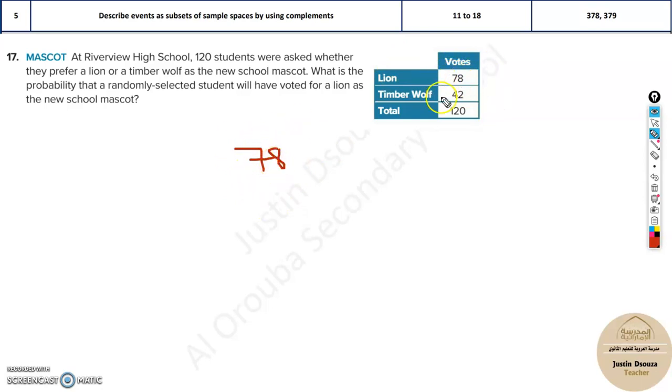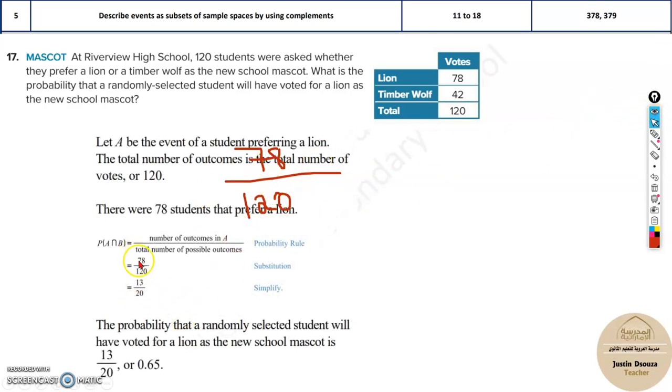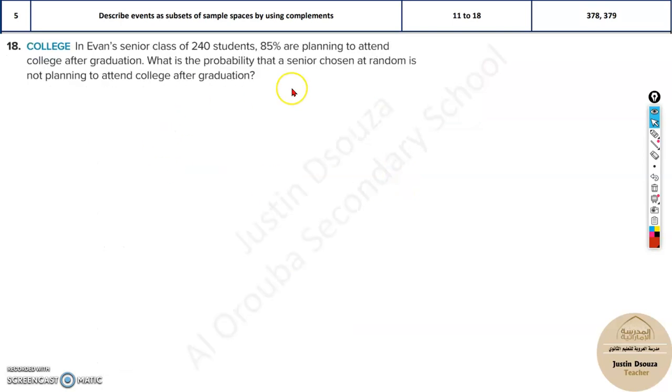The probability can be solved by number of desired outcomes. Desired is 78 divided by total outcomes, that is 120. So this would be the probability. It's 78/120 or 13/20 or 0.65. You can see the lions are leading. About 65% of votes are for lion whereas the remaining 35% are for timber wolf.